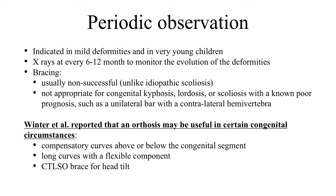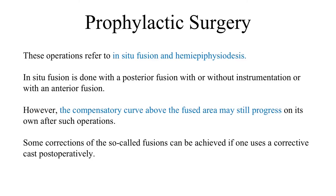For periodic observation, you bring the child every 6 to 12 months and do a standing X-ray after age one. Bracing is usually non-successful and is not appropriate for cases such as unilateral segmentation bar, nor for congenital kyphosis. Bracing may be successful with cases that have long flexible curves above and below the anomalies.